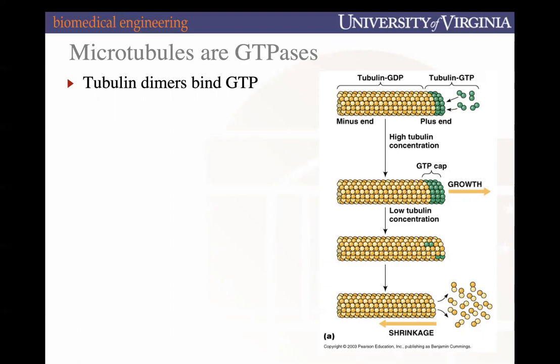As more tubulin-GTP adds on to the growing filament, we have what's called a GTP cap at the plus end. The presence of a GTP cap lowers the critical concentration, meaning it lowers the threshold for growth to occur. So the GTP cap is really helpful for tubulin growth and polymerization.